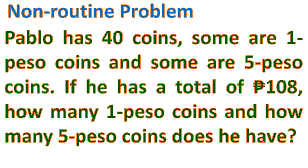Let me give you a similar non-routine problem so you can try to find the answer using my solution or your own way. Pablo has 40 coins. Some are 1-peso coins and some are 5-peso coins. If he has a total of 108 pesos, how many 1-peso coins and how many 5-peso coins does he have? Try to think of how you can solve it. You can do trial and error by multiplying by 1 and by 5 until you get 108 pesos with 40 coins total, but it will take a lot of time.